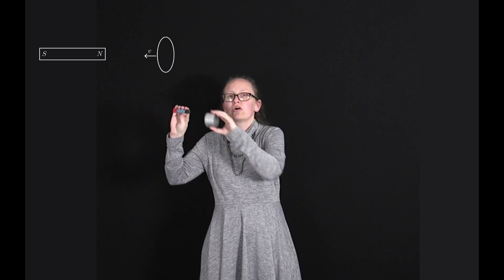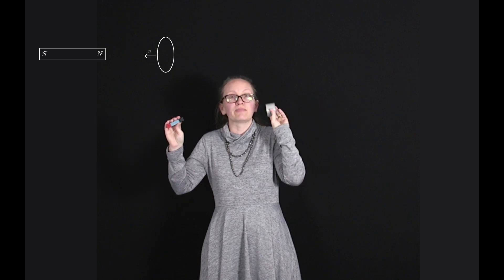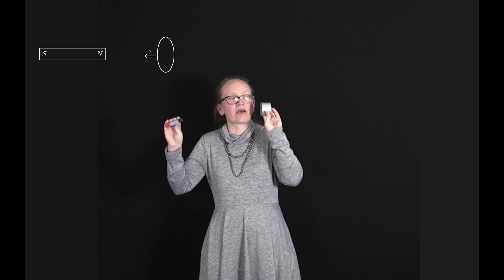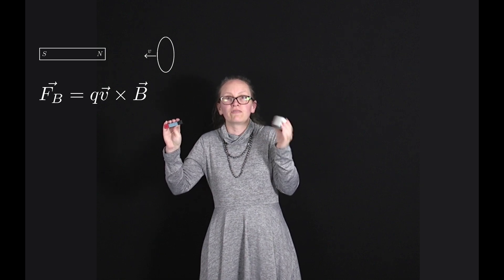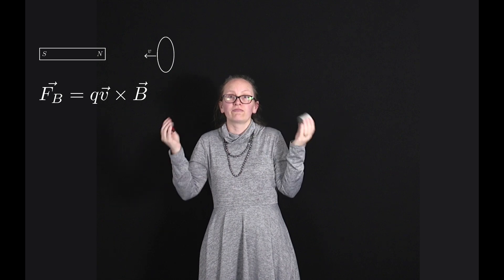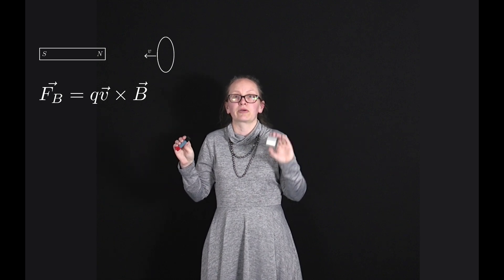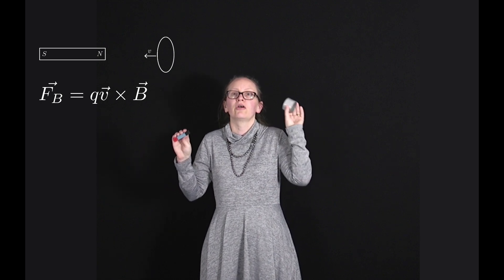We've seen that there are really deep links between electricity and magnetism. One of the ways that these forces are unified is through relativity. We saw this when moving a loop towards a magnet creates a magnetic force on the electrons inside our conducting loop, causing them to move and inducing a current. The force in this case was described by the equation f equals qv cross b.